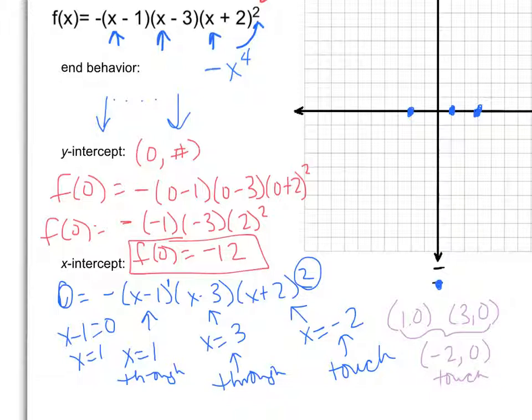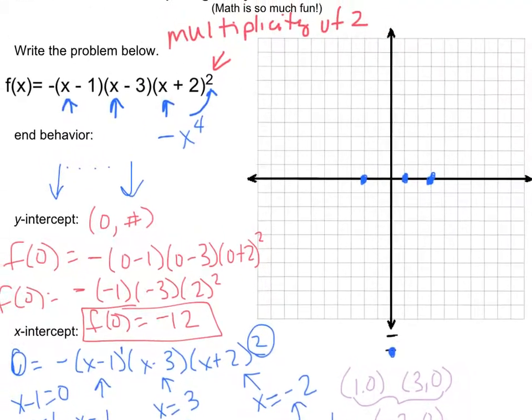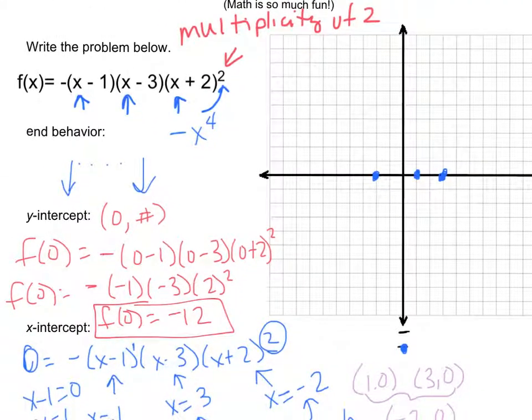Now remember your end behavior is what goes off of your axis, your x-axis. So if I'm looking at this, let's scoot our graph over here a little bit so we can get a little bit better idea of what we've got going for us. My end behavior, remember it's just touching here at negative 2, so I'm just going to make it where it touches, and then my end behavior goes down. And over here at positive 3, it's going to go through my graph, and again it's going to go down because of my end behavior.